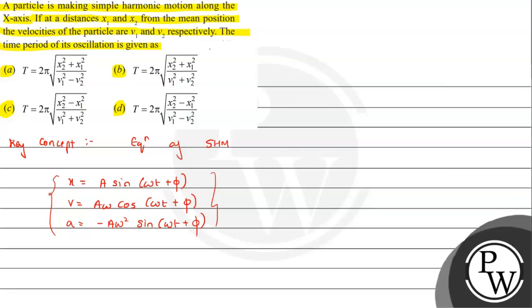We've also studied another velocity expression: v = ω√(A² - x²). This is the velocity expression in terms of displacement.